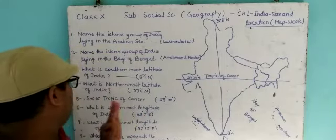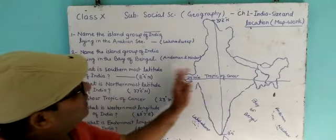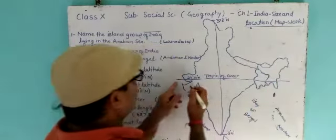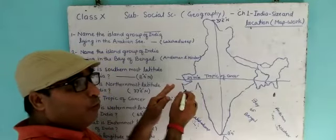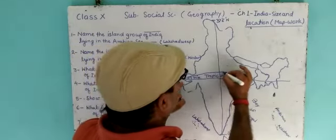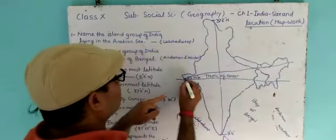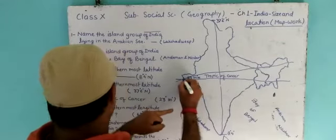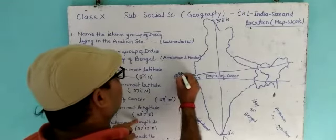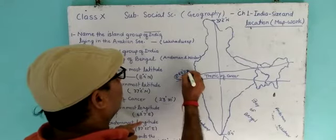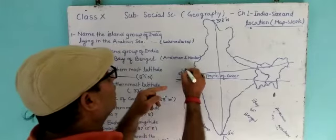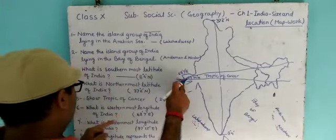What is the westernmost longitude of India? The western part is Gujarat. The westernmost longitude is 68 degrees 7 minutes East.